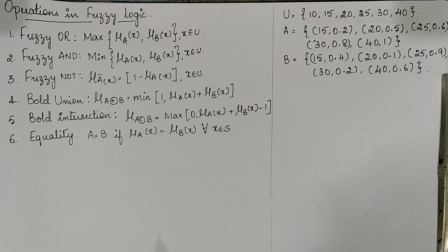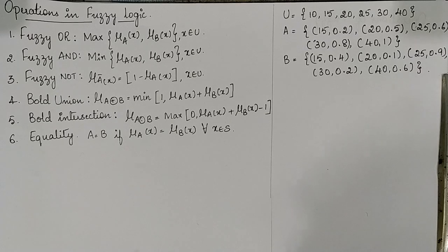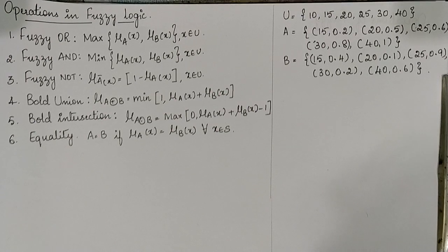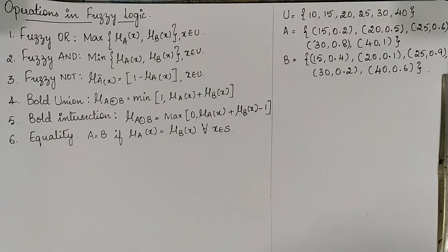Hello everyone. In this session we are going to learn the operations in fuzzy logic. In fuzzy logic there are mainly six operations. The very first operation is fuzzy OR, which is also called as union. In this operation we have to find out the maximum value of membership function.